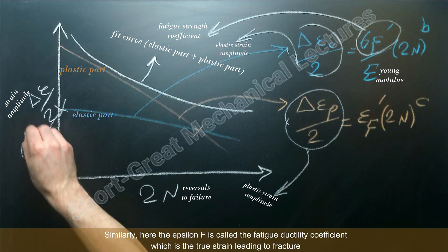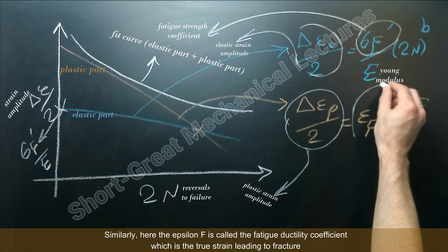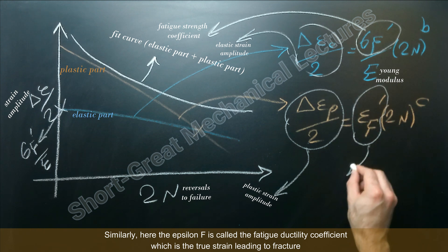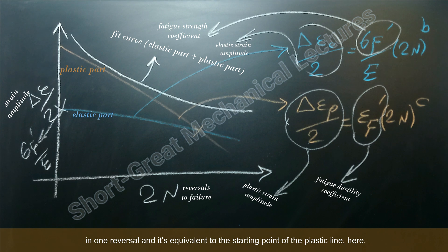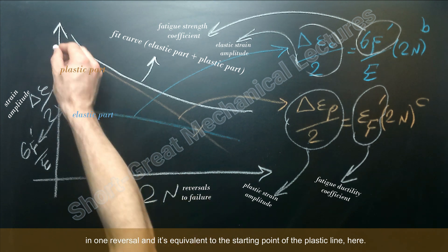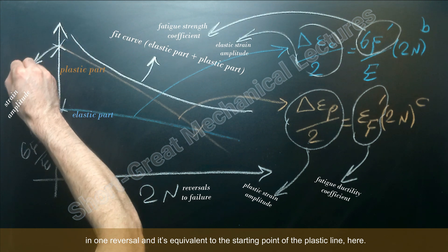Similarly here, the epsilon F is called the fatigue ductility coefficient, which is the true strain, not stress, strain leading to fracture in one reversal. And it's equivalent to the starting point of the plastic line here.